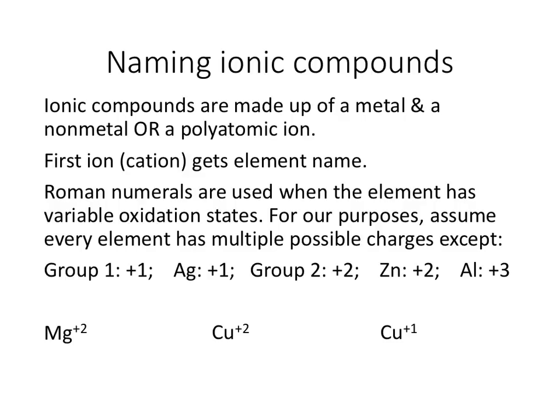For ionic compounds, those are made up of a metal and a non-metal or a polyatomic ion — so these are opposite charges or opposite sides of the periodic table. A quick note about the polyatomic ions: there is a listing of common polyatomic ions on the back page of your notes, and you will need to memorize those. For now you can flip back and forth to see the names, but you are going to have to memorize the polyatomic ions on the back of your notes.